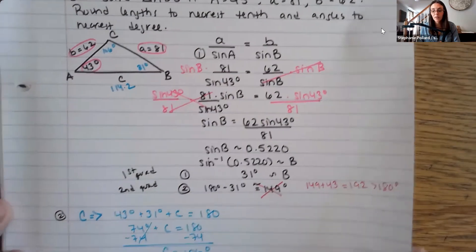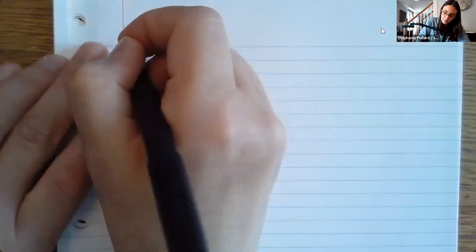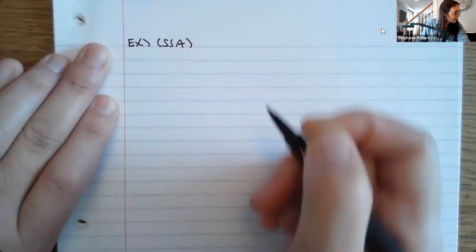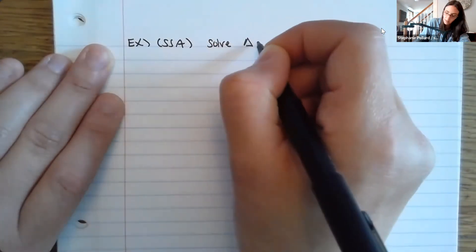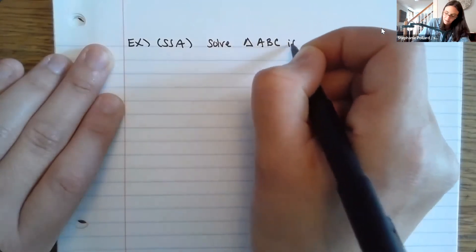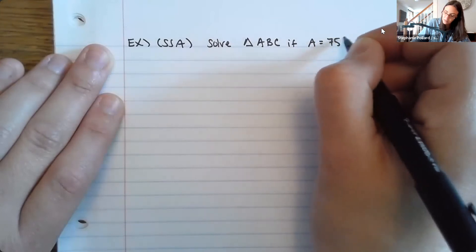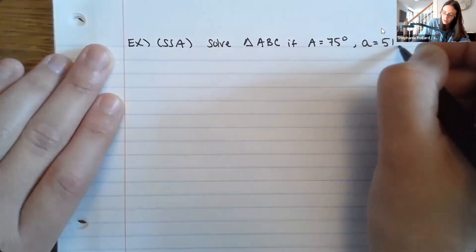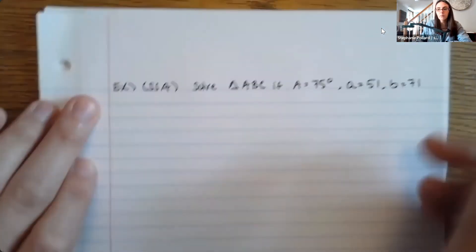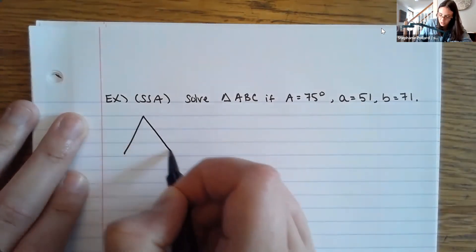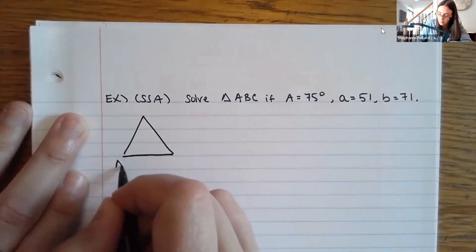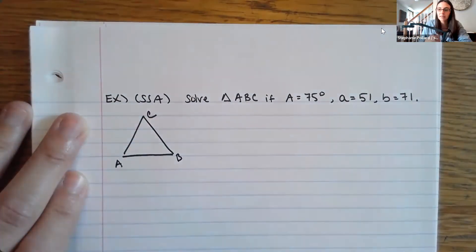Let's do another example with side-side angle — I want to show one of each of the three cases. Solve triangle ABC if A equals 75 degrees, a equals 51, and b equals 71. Again, no units given. I'll start by drawing a picture just to stay organized and visualize what's happening, even though I don't know yet what the triangle will look like.